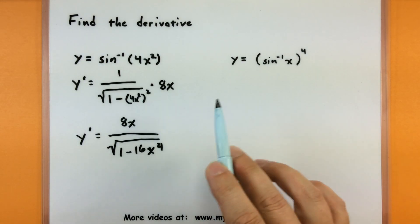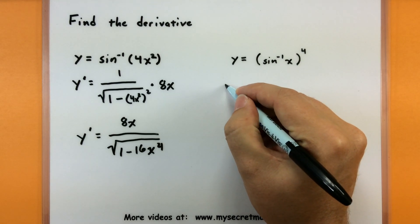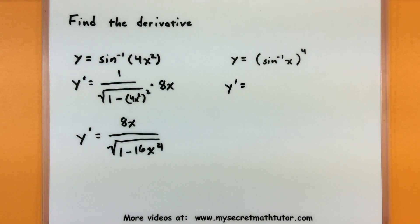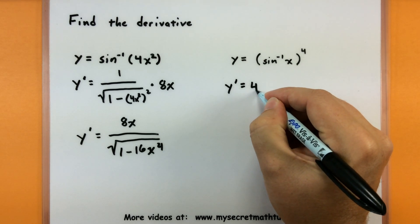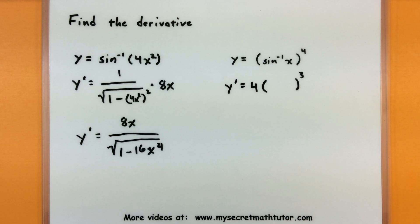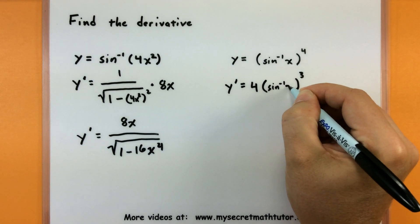All right, let's do a very similar one. Definitely want to keep in mind the derivative of inverse sine while we're doing this. We're also going to use a chain rule on this one, but notice how this time the inside piece is the inverse sine. So let's take care of that outside piece. We'll bring down the power, reduce it by 1. Now the inside will stay exactly the same, so it's just inverse sine of x.